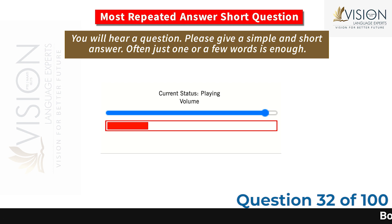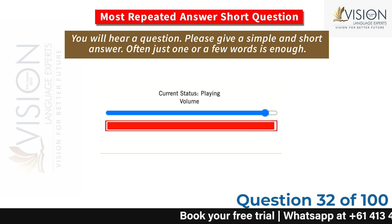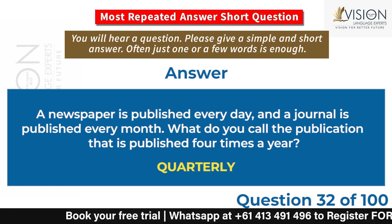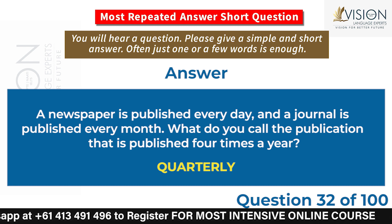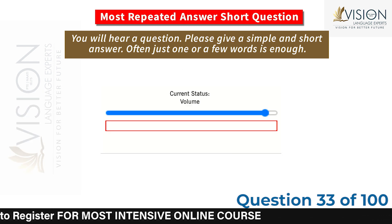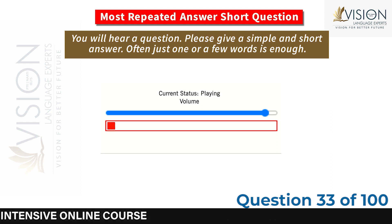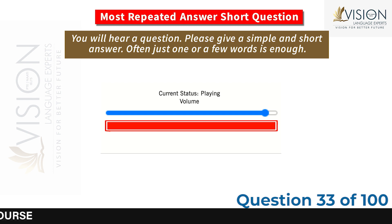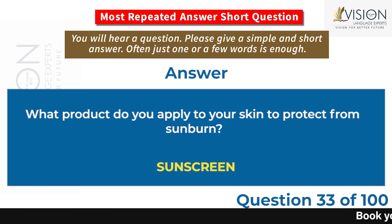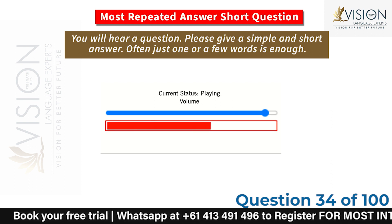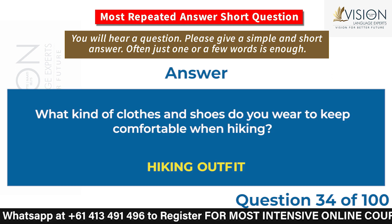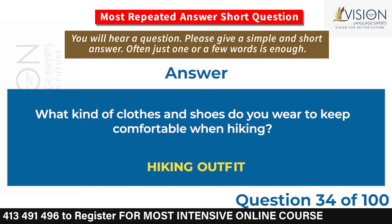A newspaper is published every day, and a journal is published every month. What do you call the publication that is published four times a year? Quarterly. What product do you apply to your skin to protect from sunburn? Sunscreen. What kind of clothes and shoes do you wear to keep comfortable when hiking? Hiking outfit.